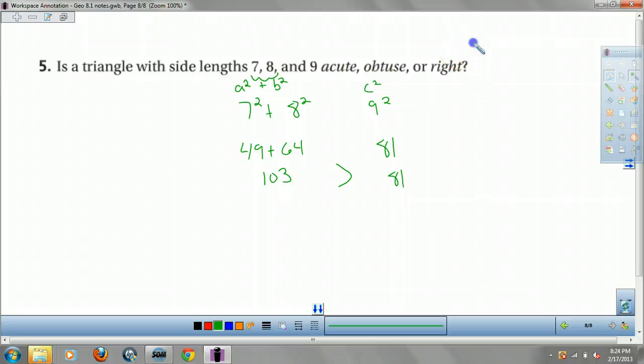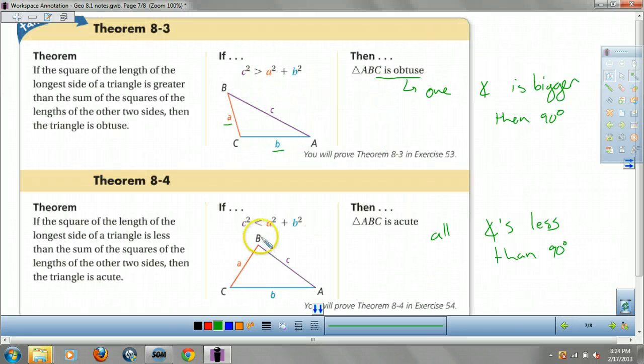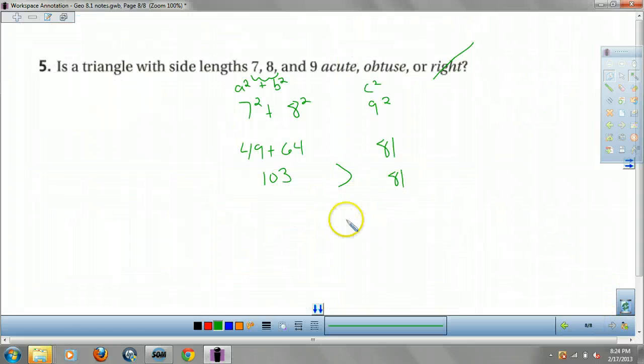So A squared plus B squared is greater than C squared. So, they aren't equal, so it's not right. If they're greater, it's acute. So it's acute. Now again, if my C squared was greater, it would be obtuse. Equal, right, less than acute. The end. Enjoy.